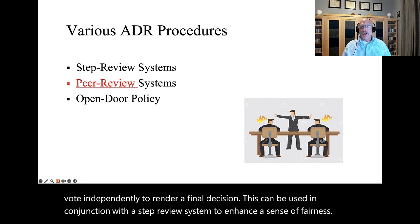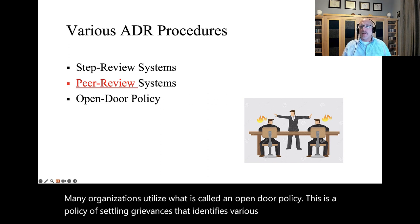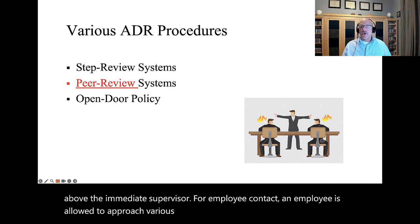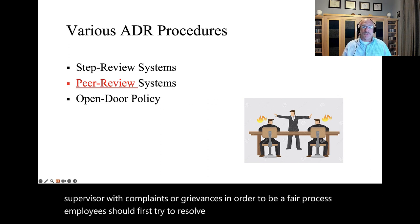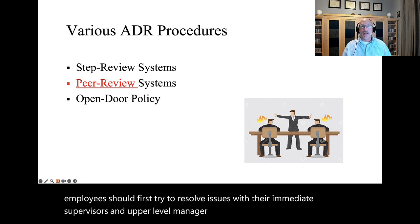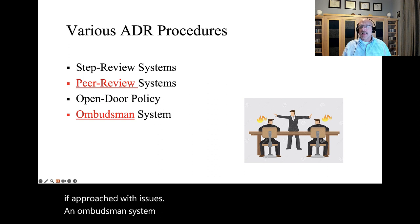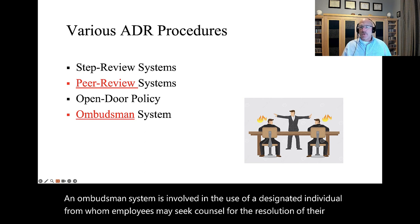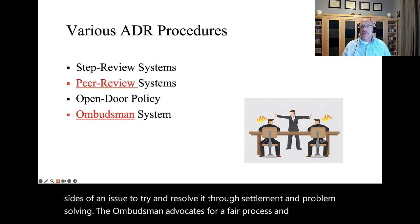Many organizations utilize what is called an open door policy. This is a policy of settling grievances that identifies various levels of management above the immediate supervisor for employee contact. An employee is allowed to approach various managers above his or her immediate supervisor with complaints or grievances. In order to be a fair process, employees should first try to resolve issues with their immediate supervisors, and an upper level manager should remain fair and open minded if approached with issues. An ombudsman system involves the use of a designated individual from whom employees may seek counsel for the resolution of their complaints. The ombudsman's role is to work cooperatively with both sides of an issue to try and resolve it through settlement and problem solving, advocating for a fair process and compromise between parties within a confidential setting.